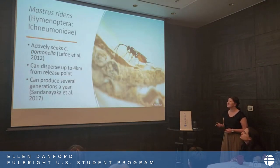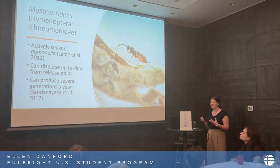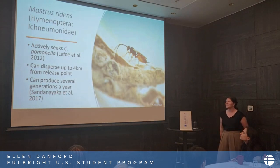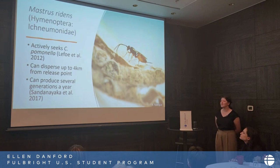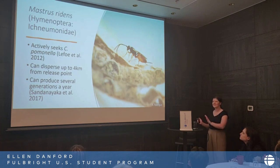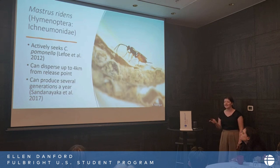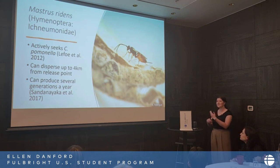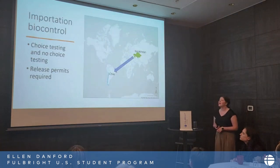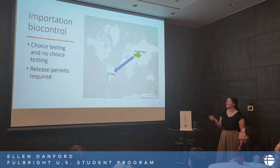Our specific wasp is really cute — it's probably smaller than your pinky nail. Its name is Mastrus ridensis, it's an ichneumonid wasp, and it's a specialist. This wasp is great because it actively seeks Cydia pomonella, the codling moth, via pheromones — so this is about as specific as it gets. They can disperse from their release point, meaning that once released in an orchard, if fed well, it could theoretically cover the whole orchard. Importantly, they can also produce several generations a year, so this wasp can follow the trends of your moth and give you pest control for the whole season.